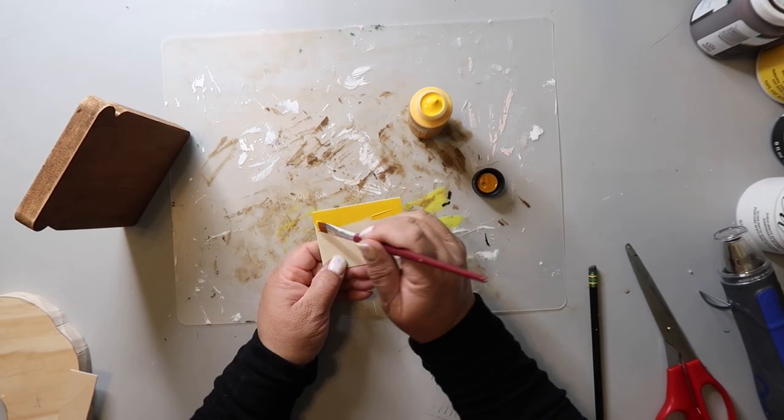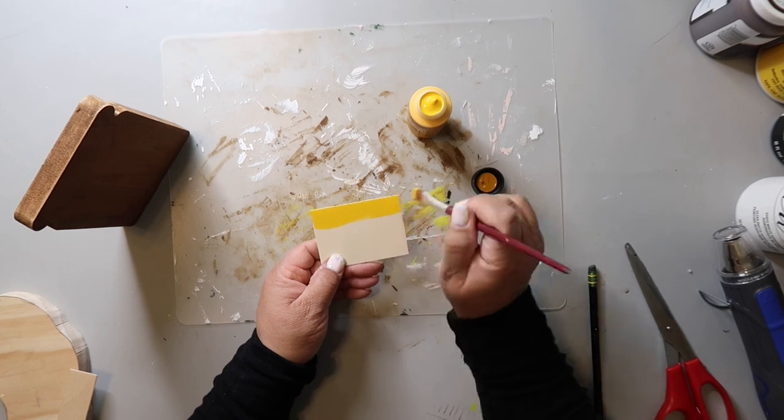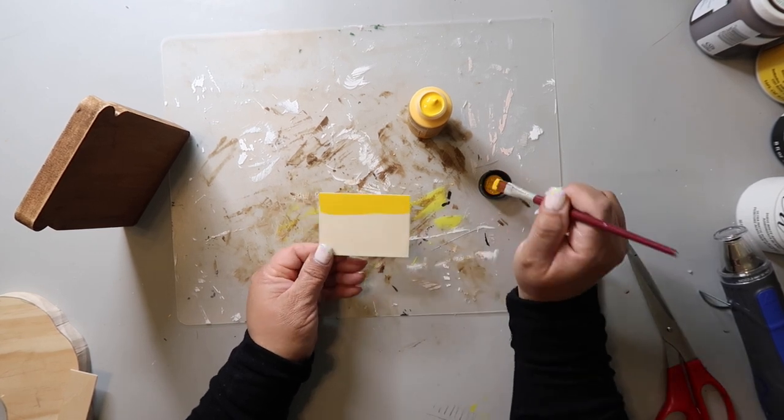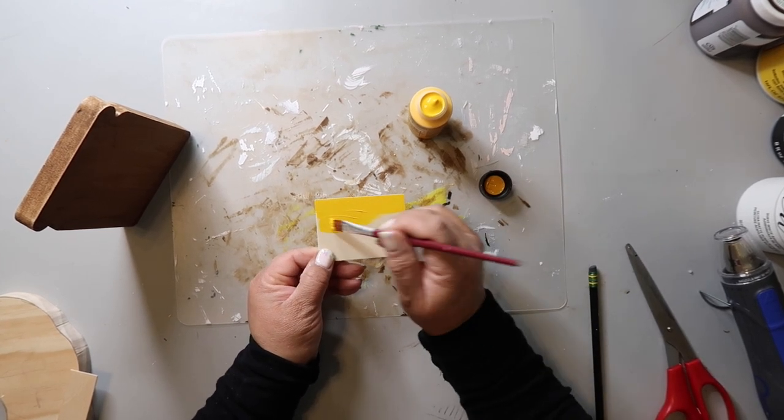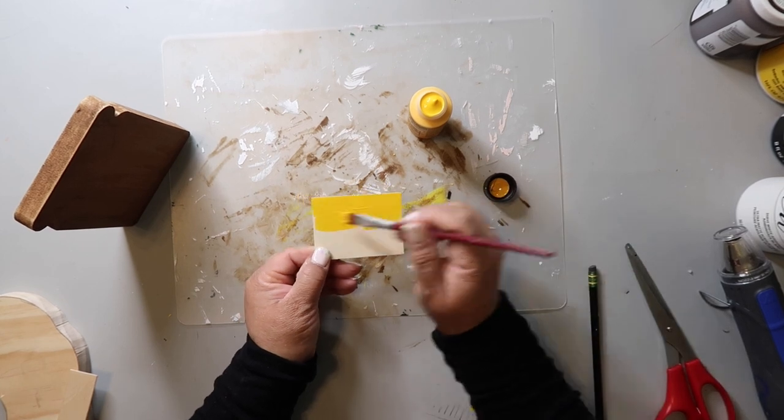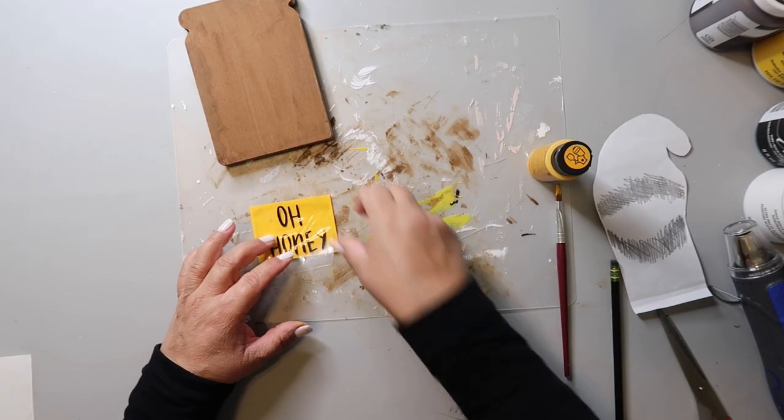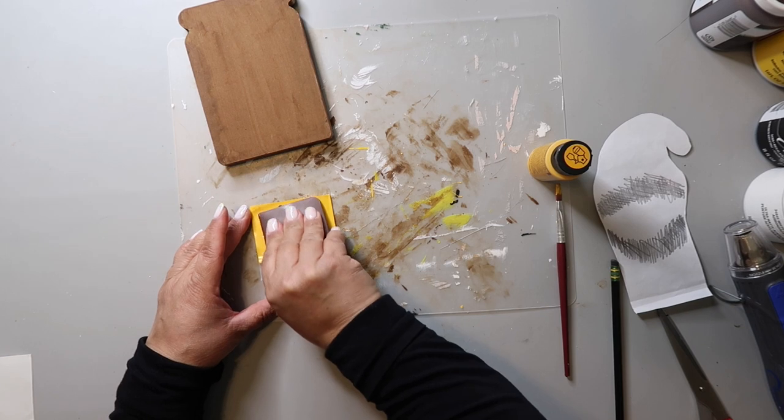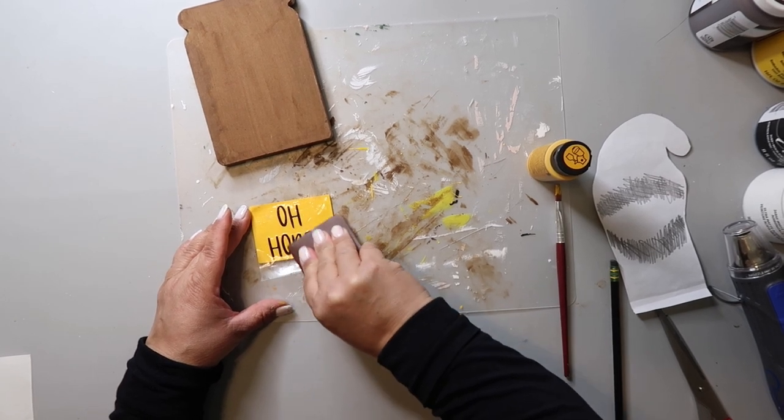This little wood piece was actually from one of those birdhouse kits from Dollar Tree. And I'm just painting it bright yellow. I made a decal with my Cricut that says, Oh Honey, and I'm applying it to the sign.